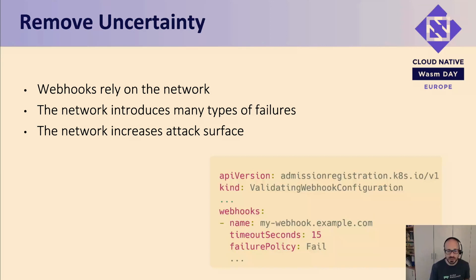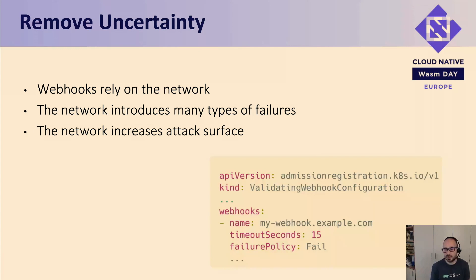Alternatively, you can set the failure policy to 'fail,' which rejects everything — even legitimate requests — risking a kind of denial of service if the webhook server is down. It's a tough place to be with no clear answer. But if you move the policies into the API server, you eliminate this uncertainty entirely.